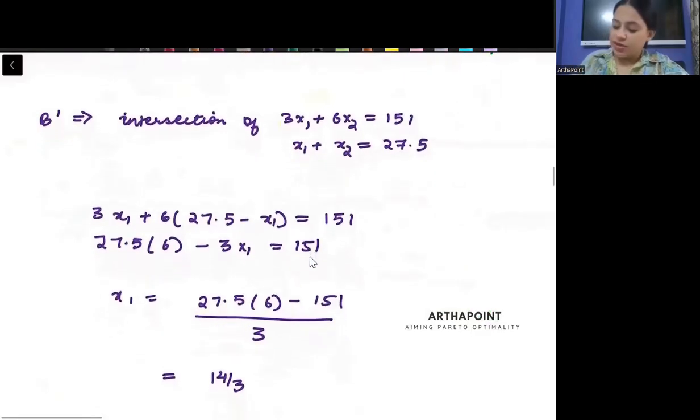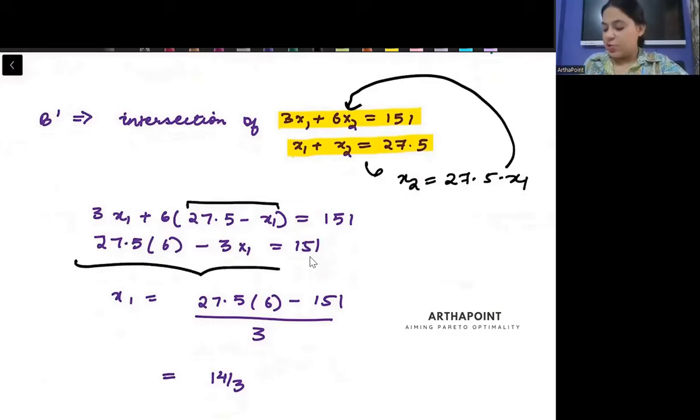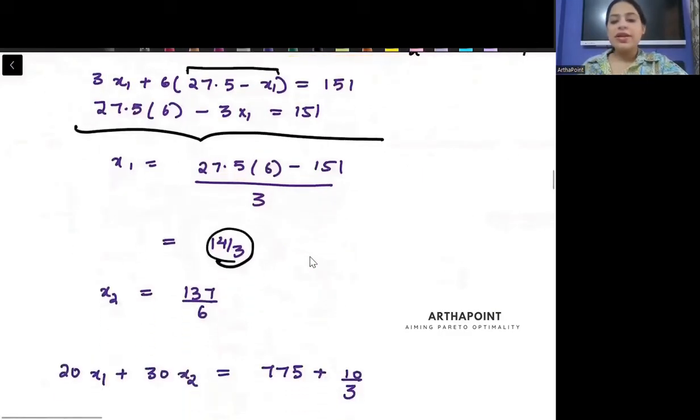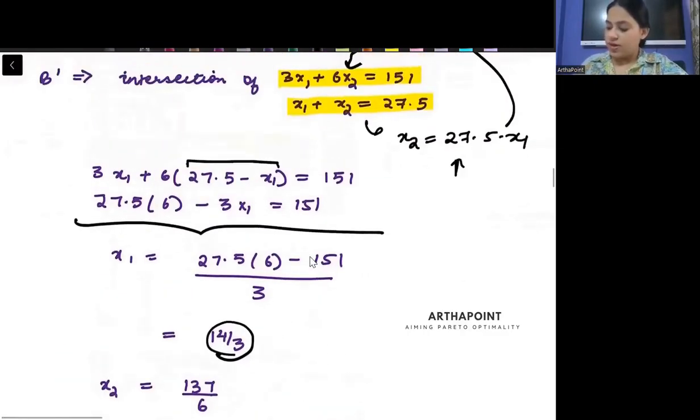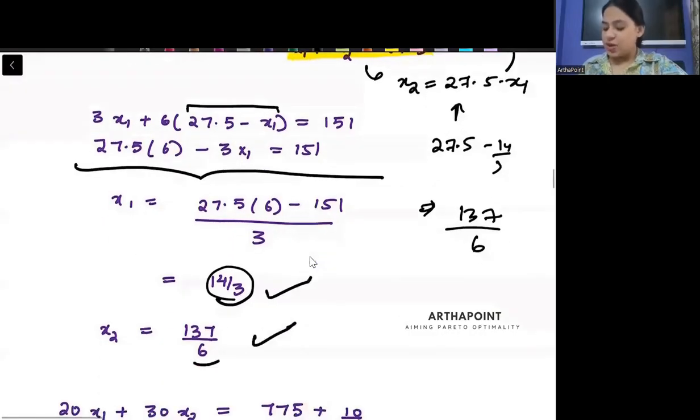Flower ka equation kya hai? 3x1 plus 6x2 is equal to 151. And butter ka equation kya hai? Same. x1 plus x2 is equal to 27.5. Beta. When you will try to solve these two equations simultaneously. Just find out the value na. Yaha se put x2 is equal to 27.5 minus x1. Put it in this equation. Get the entire equation in x1 and solve. You will get that x1 will be 14 by 3. And then, you can solve back for x2. Yaha pe daalde na. 27.5 minus 14 by 3. So you will get 137 by 6. You will get this as x1 and x2.